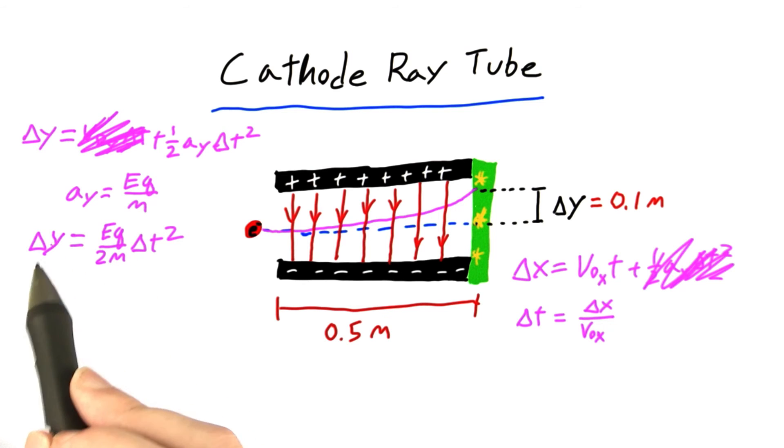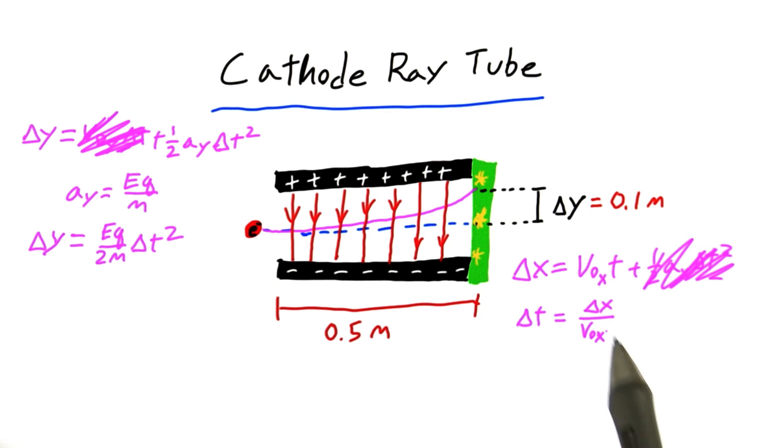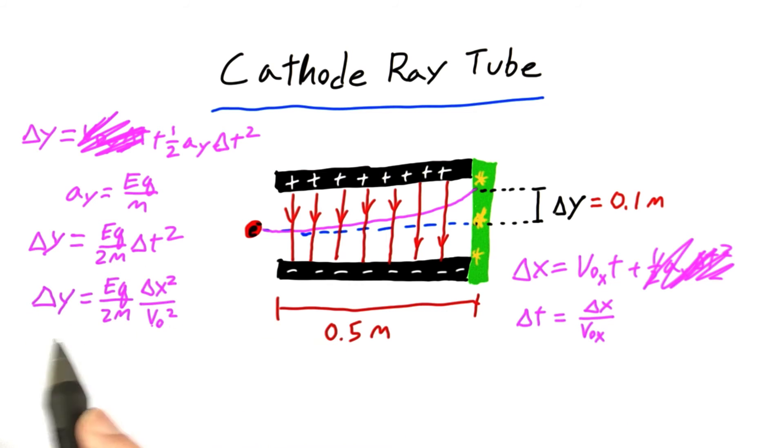And this gives us a nice equation for our displacement in the y direction. Now we can substitute in our value of delta t into this equation, which gives us this equation here.